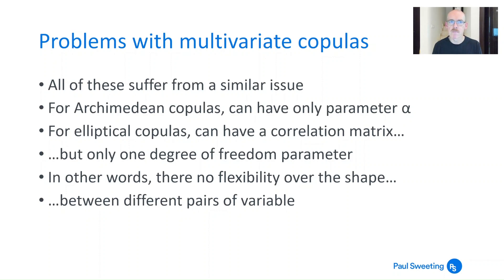But there are some challenges with multivariate copulas which is why we're looking at vine copulas in the first place. They all suffer from a similar issue. For Archimedean copulas you only have one parameter α, or if it's a two parameter Archimedean copula you only have two parameters α and β which are the same across all the variables that you're looking at.